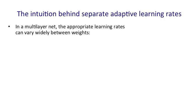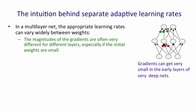Let's start by thinking why having separate adaptive learning rates on each connection is a good idea. The problem is that in a deep multi-layer net, the learning rates can vary widely between different weights, especially between weights in different layers. If we start with small weights, the gradients are often much smaller in the initial layers than in the later layers.